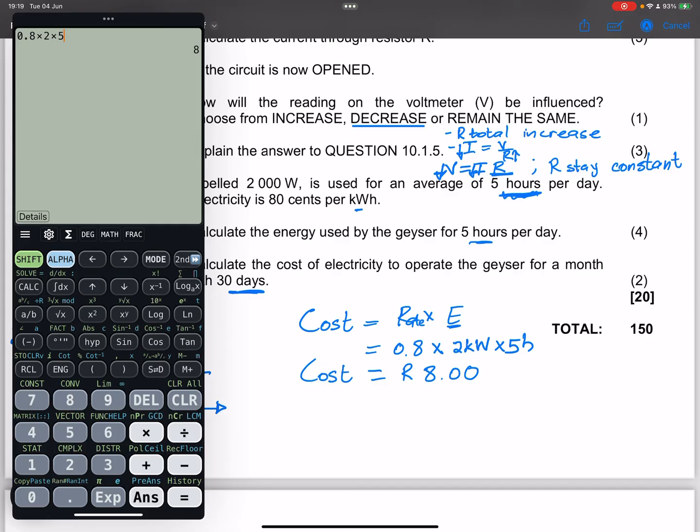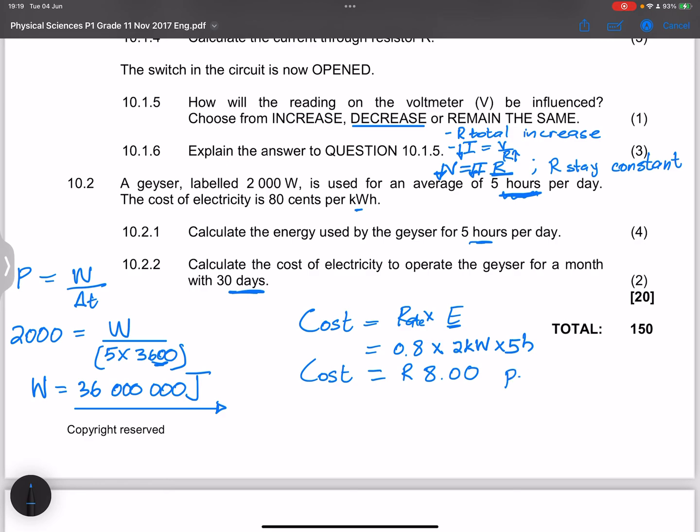So that would be an amount of 8 rands. But now, remember, they said we need to calculate the cost for 30 days. This is per day. Now, for 30 days, all we're going to do is take that amount. I'm going to say 8 multiplied by 30. And that will give us 240 rands. So that's the amount of electricity that we'll use in a span of 30 days.